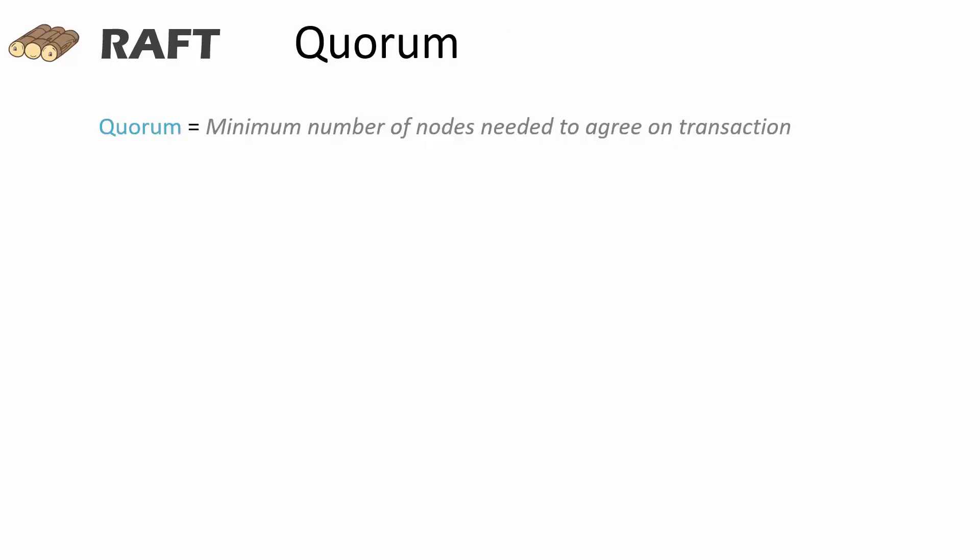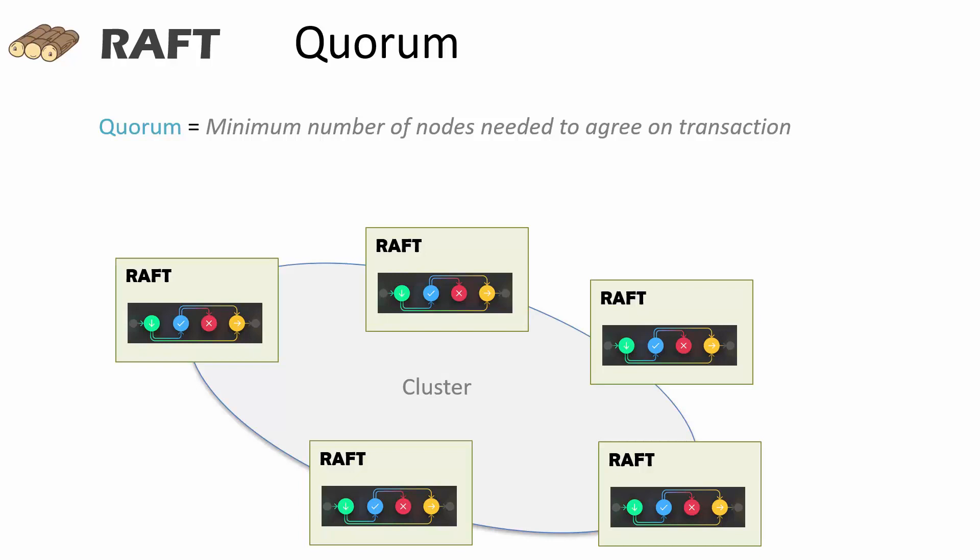Quorum is defined as the minimum number of raft nodes that need to agree on a transaction or a log entry to be added to the finite state machine managed by the raft nodes. Consider this five node cluster. In this cluster, three out of five nodes must agree on the log entry or transaction to be logged in the finite state machine.